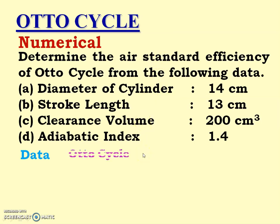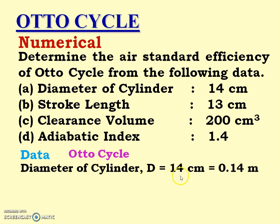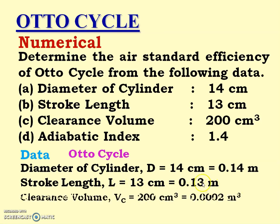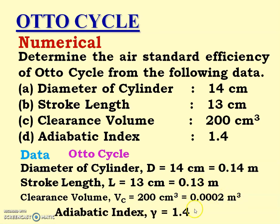Let us write down the data. Otto cycle: diameter of cylinder D = 14 cm, converting to SI units that is 0.14 m. Stroke length L = 13 cm, so it is 0.13 m. Clearance volume = 200 cm³, which equals 0.0002 m³. Adiabatic index gamma = 1.4.